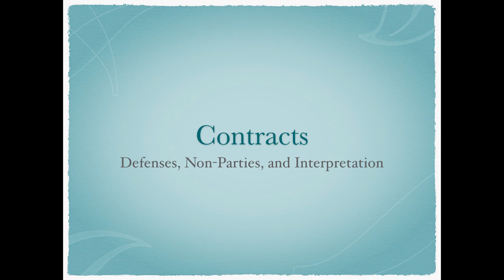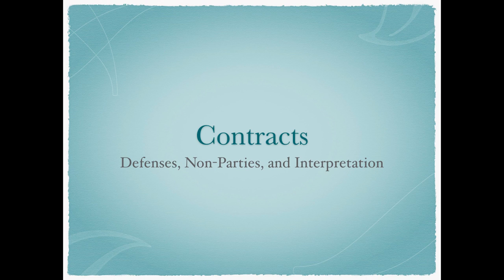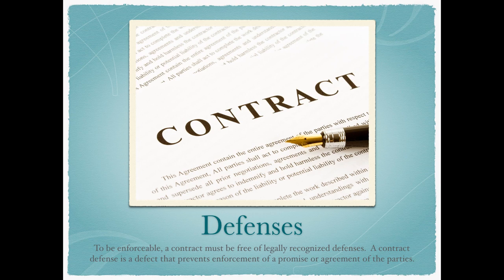We discussed in the prior video on contract formation that in order to form a valid contract, you needed three things: the first was mutual assent of the parties, the second was consideration, and the third was the absence of defenses. If a defense is floating around, one party can say the contract can't be enforced. So whenever you write your contracts, you want to make sure you haven't created a defense unnecessarily.